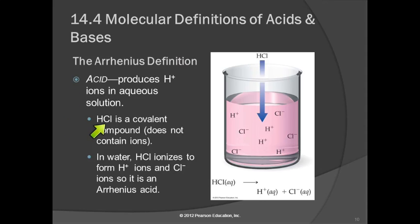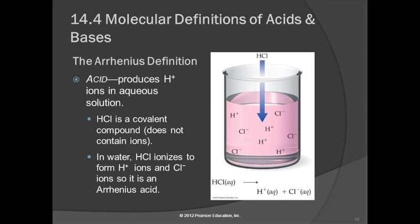So HCl, hydrogen chloride, is actually a covalent compound because hydrogen is a non-metal. It does not contain ions, but when we put HCl into water, it ionizes and forms hydrogen ions. So when we put this molecular compound into water, it forms ions — one of them is a hydrogen ion — and so this is defined as an Arrhenius acid.